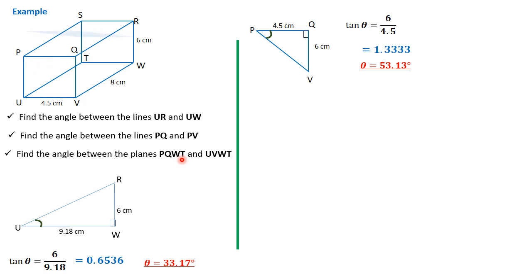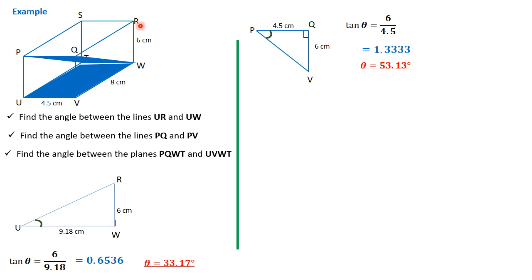We have a plane P,Q,W,T — you're moving from P straight across to Q, then diagonally to W, then across to T, then back to P. It's a rectangle but it appears like a parallelogram for us. Again, we have the plane U,V,W,T, which is the base of the cuboid. So we are asked to look for the angle between those two.